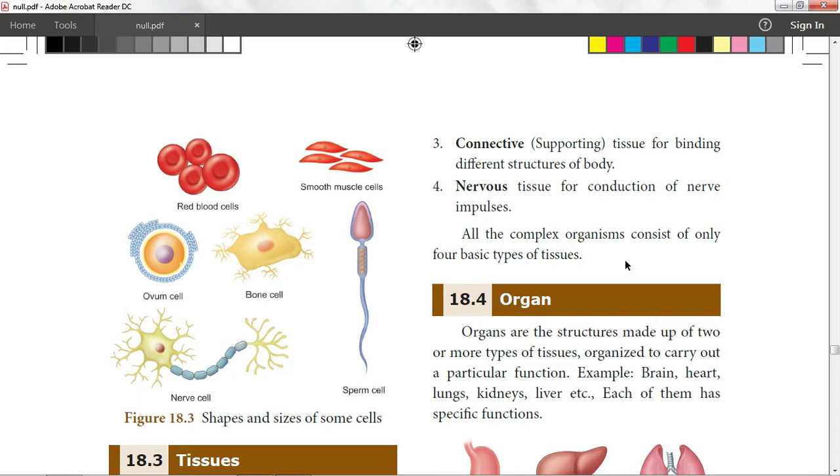Nervous tissue is for conduction of nerve impulses. All complex organisms consist of only four basic types of tissues.